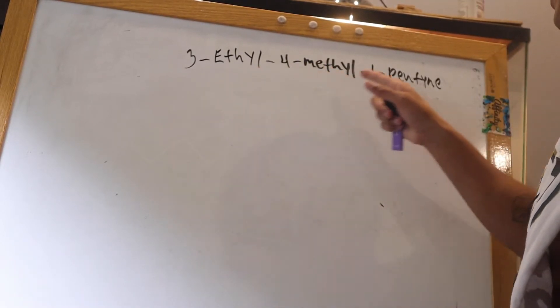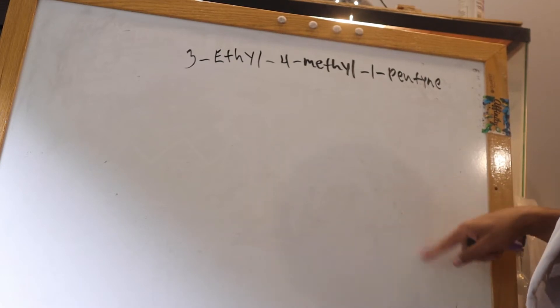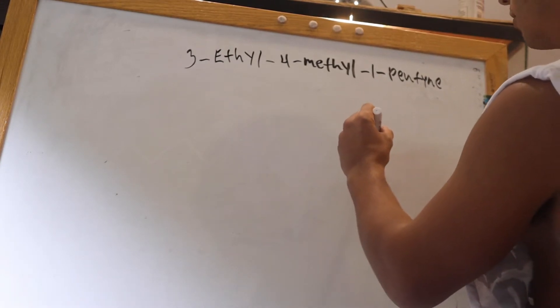Alright, so this is 3-ethyl-4-methyl-1-pentene. The way we go about this is we're going to start again counting the carbons.